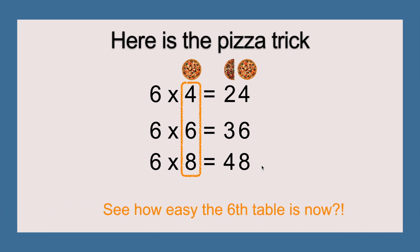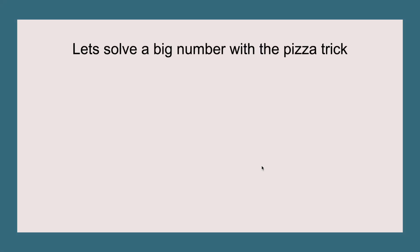That also means six times four equals twenty-four, six times six equals thirty-six, and six times eight equals forty-eight. See how easy the six times table is now? How about we try some big numbers and solve a big number with the pizza trick?